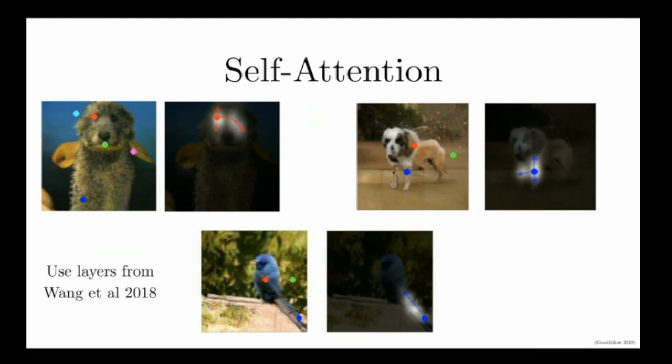All of these images here are generated by the generator network, and we can actually peek inside and see what the attention was doing while it drew each of these images. If we look at this red key point on the dog's eye, we can actually look at the attention map and see where the attention was directed elsewhere in the internal representation of the image as it was generating the eye. You can see that it primarily attended the dog's face, especially the dog's other eye. We believe that helps it to draw a dog with a symmetrical face, with both eyes matching in terms of size, color, and shape.